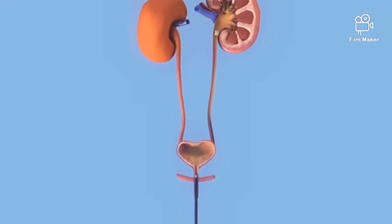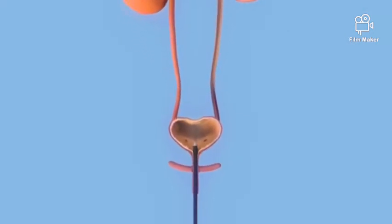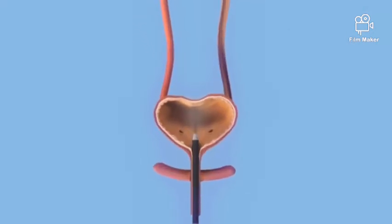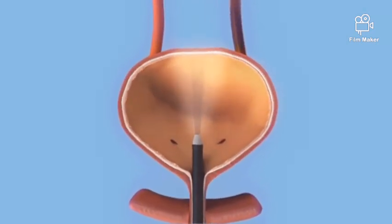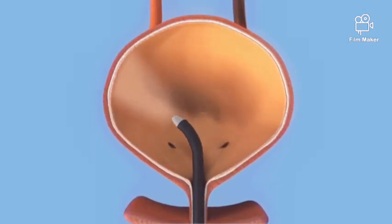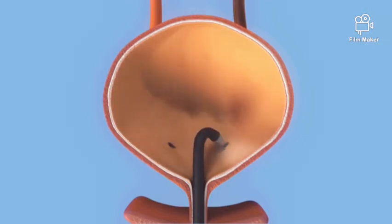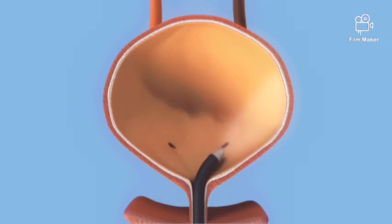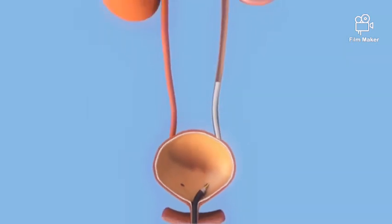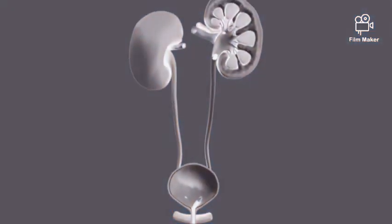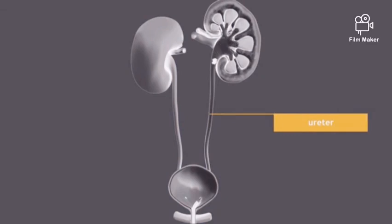The procedure is usually done under general anaesthesia. A tube with a tiny optic camera is inserted through the urethra into your bladder. The bladder is inspected and the ureteric opening is located. A contrast study may be performed to assess the urinary tract and to locate the obstruction. X-ray images can now clearly outline the ureter and the obstruction.